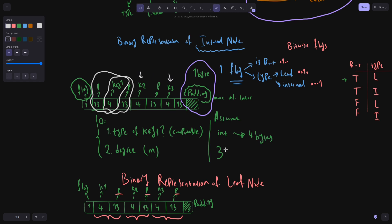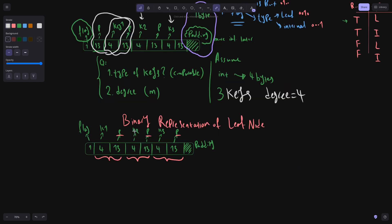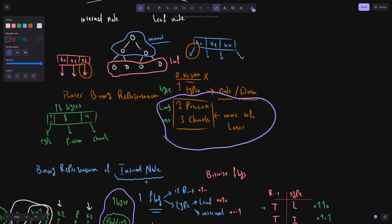In our example, the node had three keys, which means the degree of the tree was four. And the binary representation of a leaf node was pretty much like an internal node. However, there wasn't a pointer here, since every key paired with a pointer, and the pointers point to the data on disk, which if we go back, means that the type of the pointer is data.